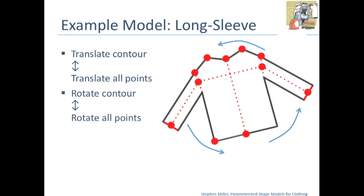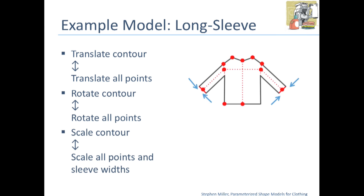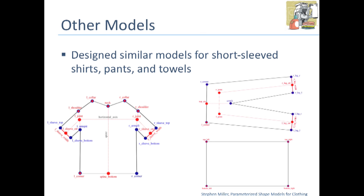In order to do translation, rotation, or scaling, since most of our parameters are simply points, we just need to translate, rotate, or scale the points, and then scale the sleeve width accordingly. We design similar models for short-sleeved shirts, pants, and towels.